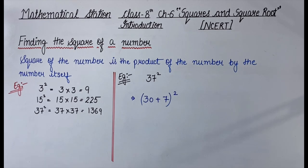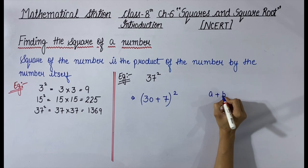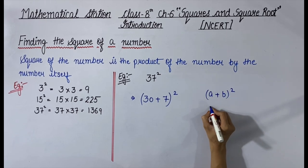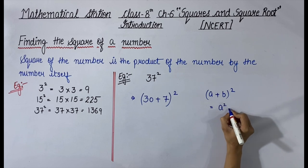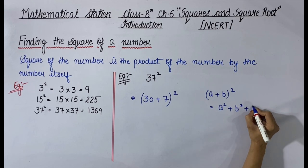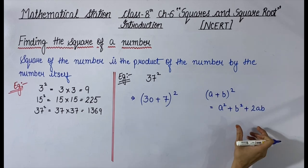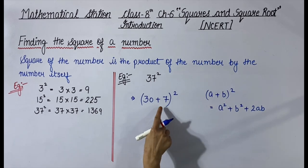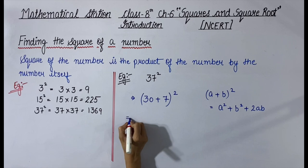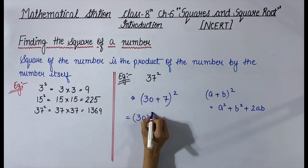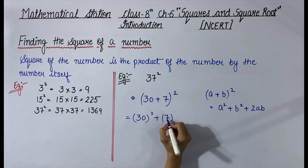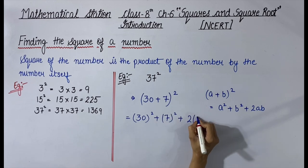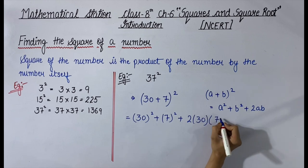Now if you look at the expression, we can use the algebraic identity from previous classes: (a + b)² = a² + b² + 2ab. Here, a = 30 and b = 7. So (30 + 7)² = 30² + 7² + 2 × 30 × 7.